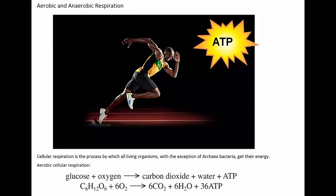Cellular respiration is the process by which all living organisms, with the exception of archaea bacteria, get their energy. Glucose is the primary source of energy that is used to drive the metabolic pathways in cells. Glucose molecules are broken down in cells in order to release energy in the form of ATP. And this reaction is known as aerobic cellular respiration and is summarized as glucose plus oxygen is broken down to give you carbon dioxide, water and ATP.